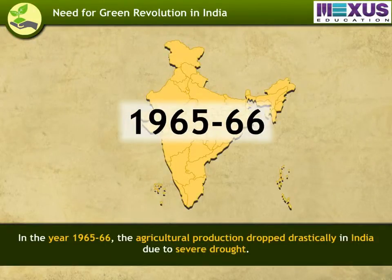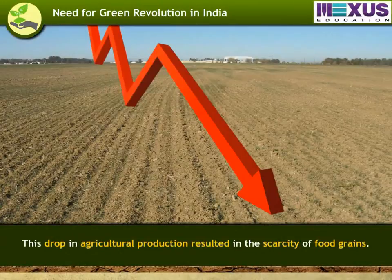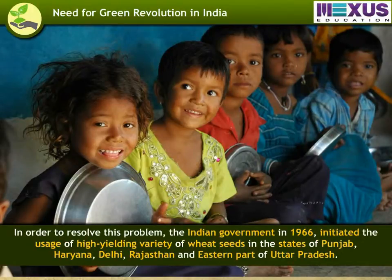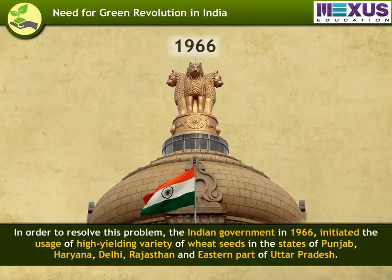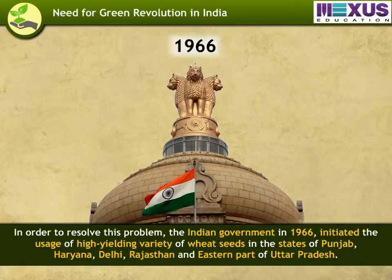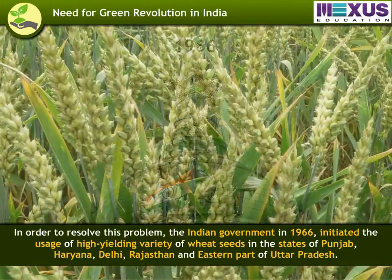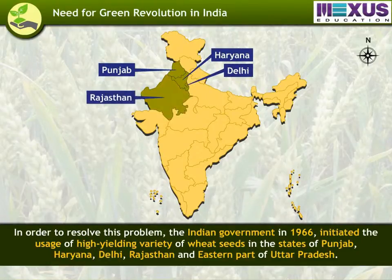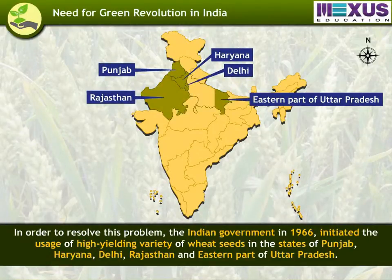In the year 1965-66, agricultural production dropped drastically in India due to severe drought. This drop in agricultural production resulted in the scarcity of food grains. In order to resolve this problem, the Indian government in 1966 initiated the usage of high-yielding variety of wheat seeds in the states of Punjab, Haryana, Delhi, Rajasthan, and the eastern part of Uttar Pradesh.